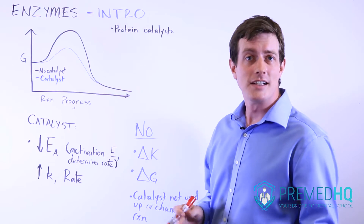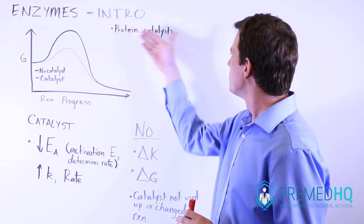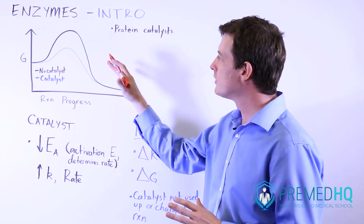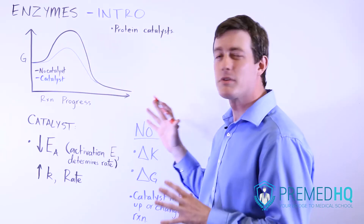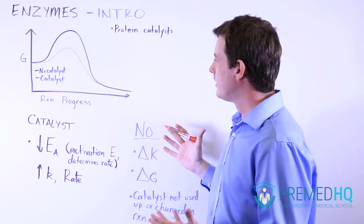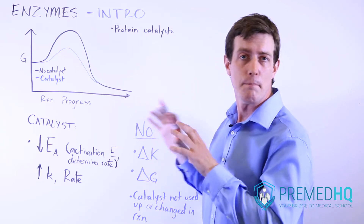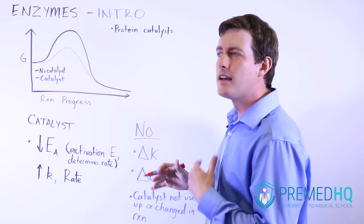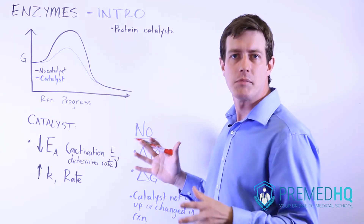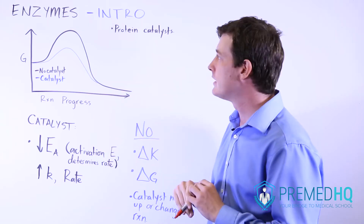Now we'll discuss enzymes. At their root, enzymes are protein catalysts. We'll go over the definition and some features of catalysts before getting to other things like the types of enzymes, the mechanisms of catalysis, how they're regulated, and various enzyme kinetics that you can use to figure out how quickly a reaction is proceeding.